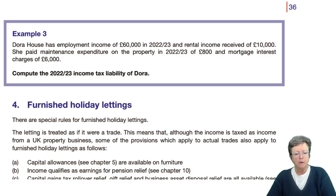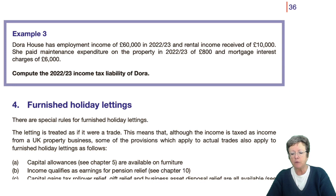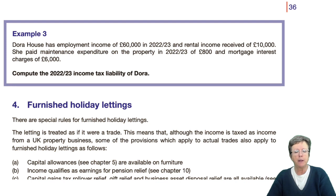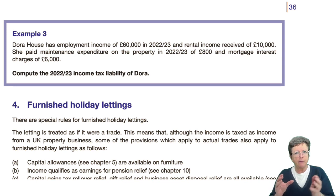Example number three. Dora House has employment income of £60,000 in 2022-23. Rental income received of £10,000. She paid maintenance expenditure on that property of £800 and has mortgage interest charges of £6,000. So if we have a look at the answer to that, we'll see how all those various bits that we've talked about all come together.